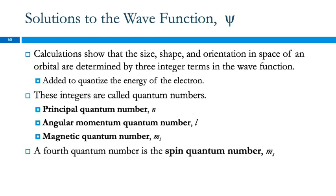The calculations show us that the size, shape, and orientation in space of these regions — these orbitals — depend on three integers that are in the wave function. Those are called quantum numbers. We need those integers in the equation because the energy of electrons is quantized. Electrons in an atom can only have particular energies.